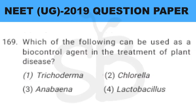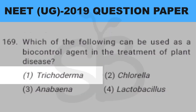Question number 169: which of the following can be used as a bio-control agent in the treatment of plant disease? This is from plus 1 biology, chapter 2, kingdom fungi. So the answer is option 1: Trichoderma.